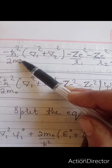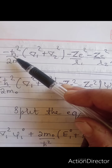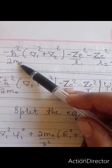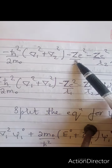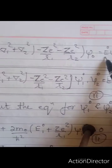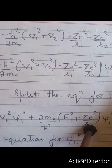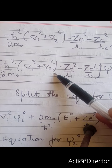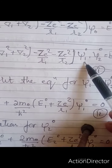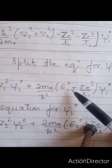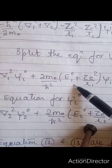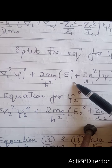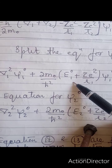H⁰ is given by: minus ℏ²/2m·(∇₁² + ∇₂²) minus [ZE²/R terms], applied to ψ⁰ = E⁰·ψ⁰. With respect to ψ⁰, we have ψ⁰ = ψ₁⁰·ψ₂⁰. So the first equation will be for ψ₁⁰ and the second equation will be for ψ₂⁰.